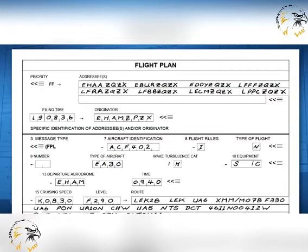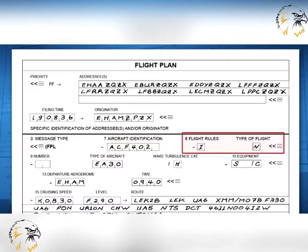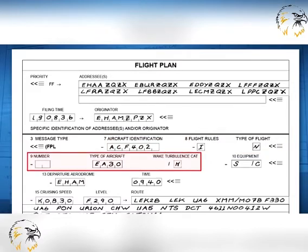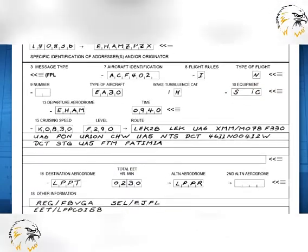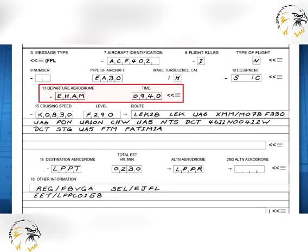A flight plan is to contain the following as considered relevant by the appropriate ATS requirements: aircraft identification, flight rules and type of flight, number and type of aircraft and wake turbulence category, equipment, departure aerodrome, and estimated off-blocks time (EOBT).